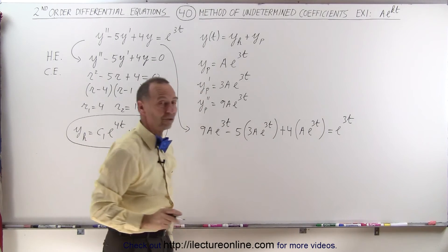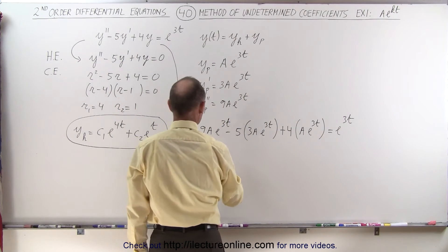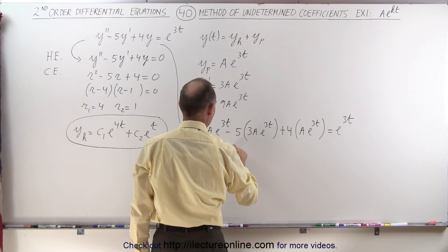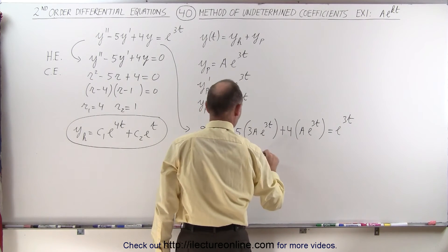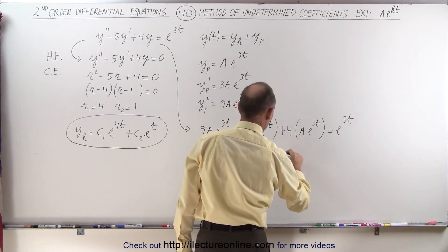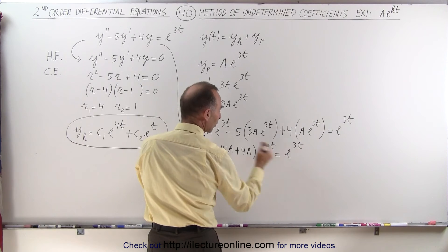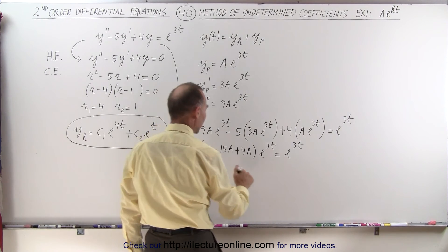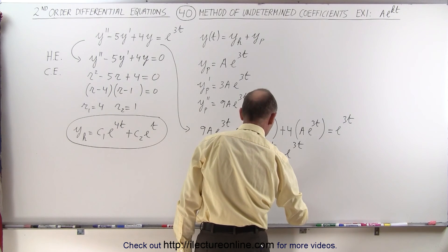We solve this linear equation for a. Factoring out e^(3t), we get: (9a minus 15a plus 4a)*e^(3t) equals e^(3t). The coefficient inside the parentheses must equal 1: 9a plus 4a equals 13a, minus 15a gives minus 2a, so minus 2a equals 1, meaning a equals negative one-half.